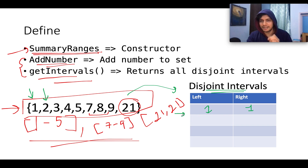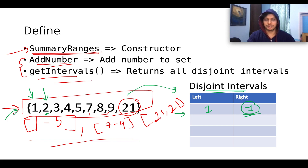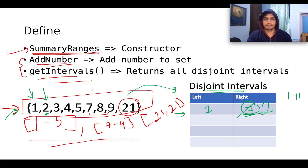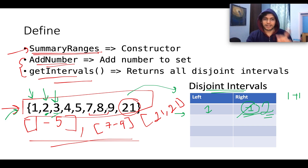The next element is 2. We compare with the existing disjoint intervals, extracting the right value of the last added interval. The last added interval is [1,1], so the rightmost index is 1. Since elements are always sorted, we check if 1 + 1 equals the new input: 1 + 1 = 2, which matches. So we replace the right interval with 2 — these are contiguous. Next is 3: the last interval is [1,2], rightmost is 2, and 2 + 1 = 3, contiguous, so we replace 2 with 3.